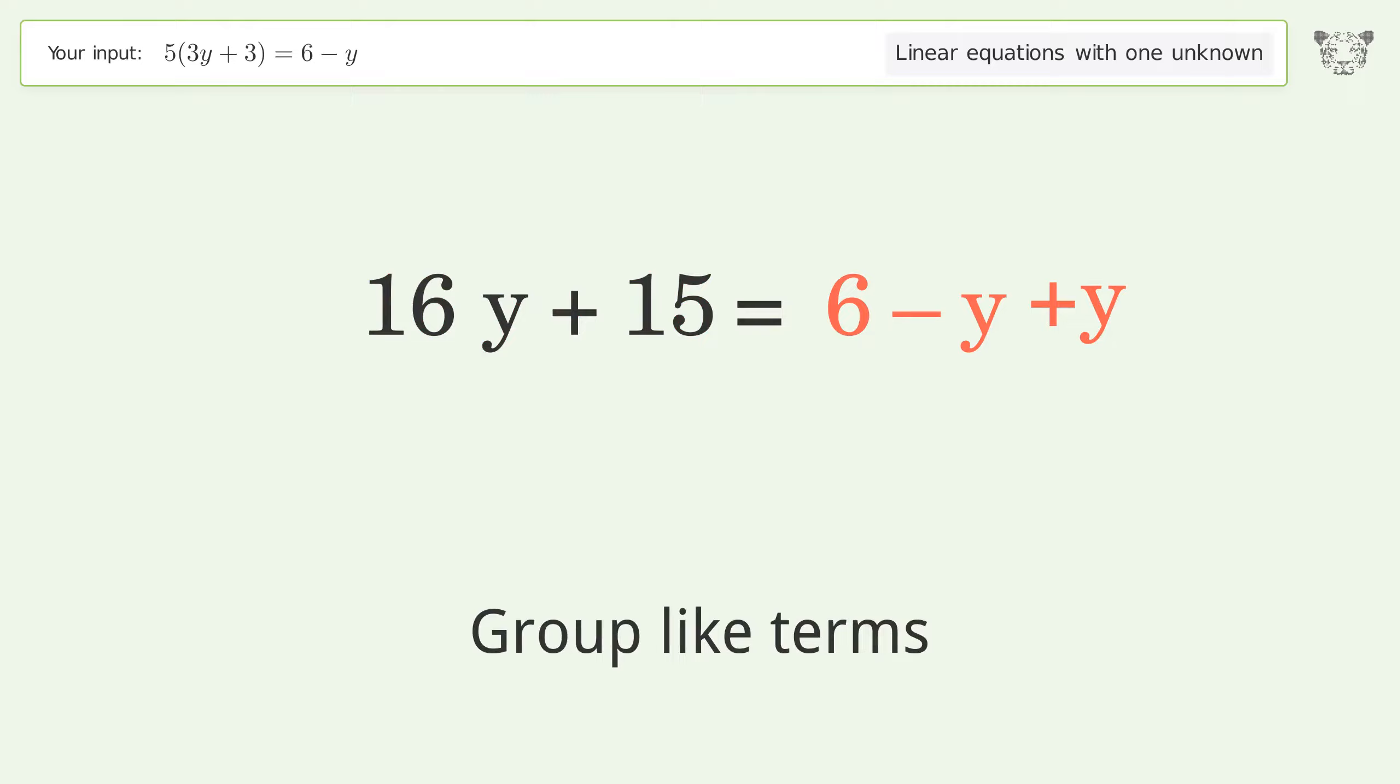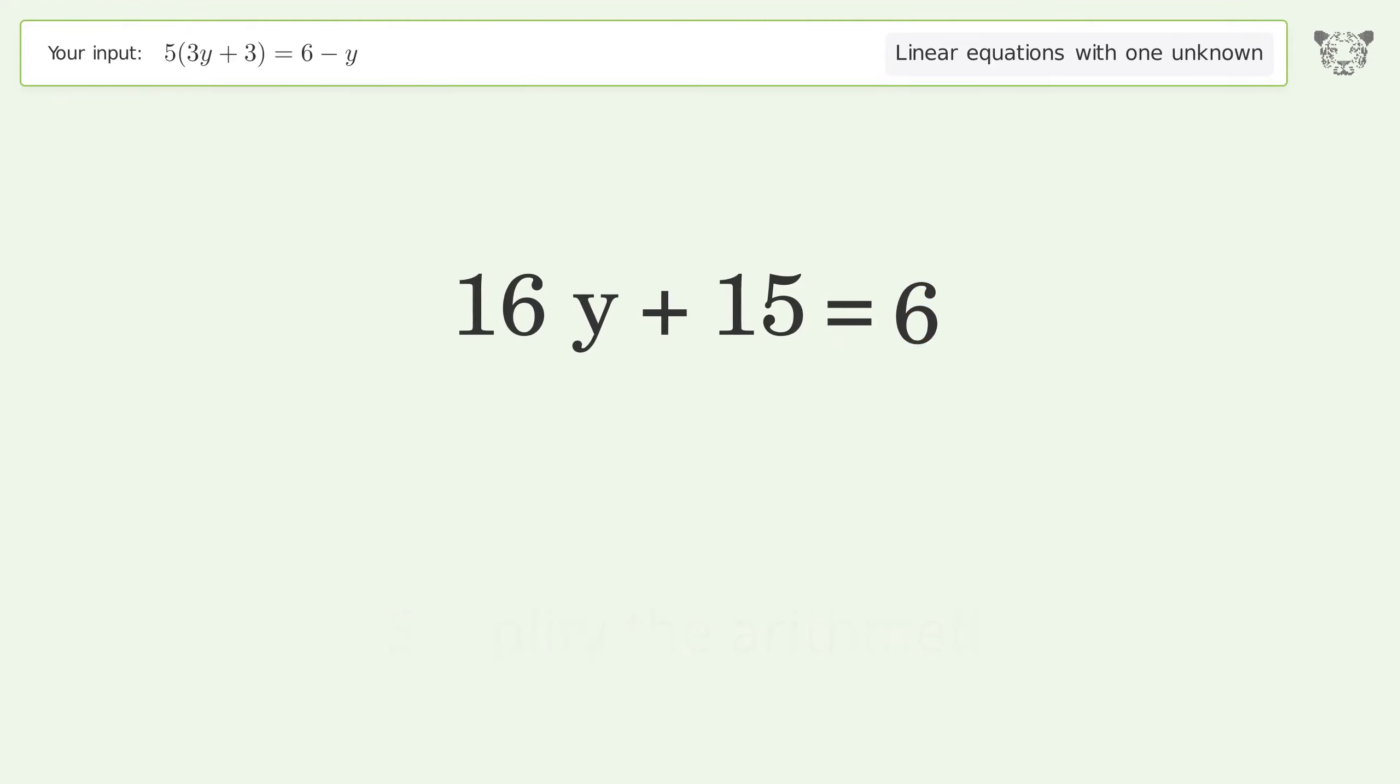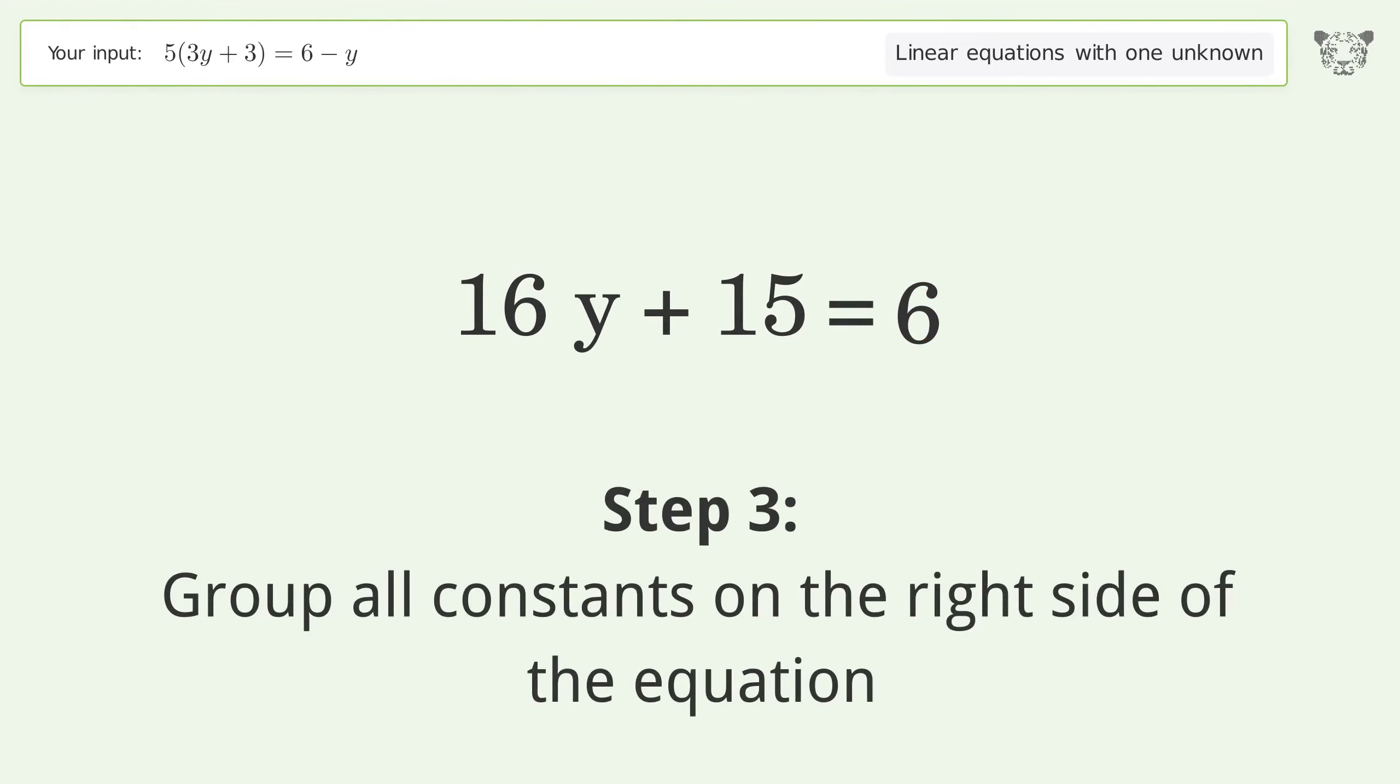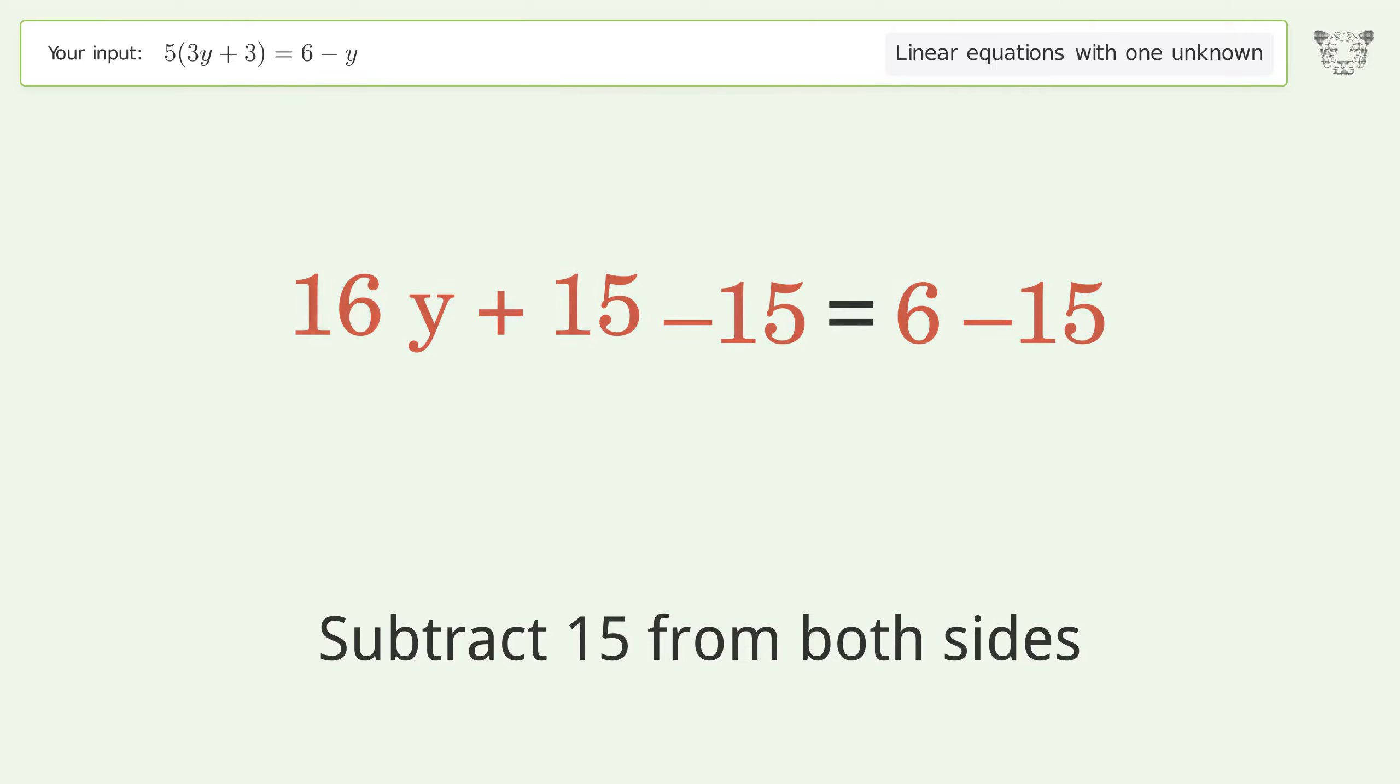Group like terms and simplify the arithmetic. Group all constants on the right side of the equation. Subtract 15 from both sides and simplify the arithmetic.